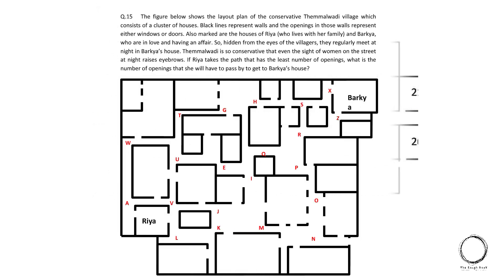Next question. The figure below shows the layout plan of the conservative Temmelwadi village which consists of a cluster of houses. Black lines represent walls and the openings in those walls represent either windows or doors. Also marked are the houses of Ria who lives with her family and Barkha who are in love and having an affair. So hidden from the eyes of the villagers, they regularly meet at night in Barkha's house. Temmelwadi is so conservative that even the sight of a woman on the street at night raises eyebrows.